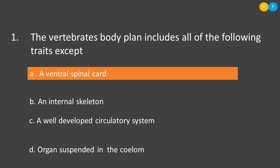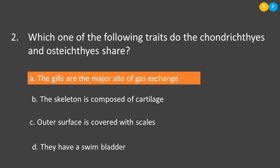The next question: which of the following traits do Chondrichthyes and Osteichthyes share? These are two kinds of fishes — both use fins as a locomotory organ and share some common characteristic features while differing in others. Option A: gills are the major site of gas exchange. This is correct for both kinds of fishes, because Chondrichthyes as well as Osteichthyes use their gills for exchanging respiratory gases. So this is a common character observable in both.